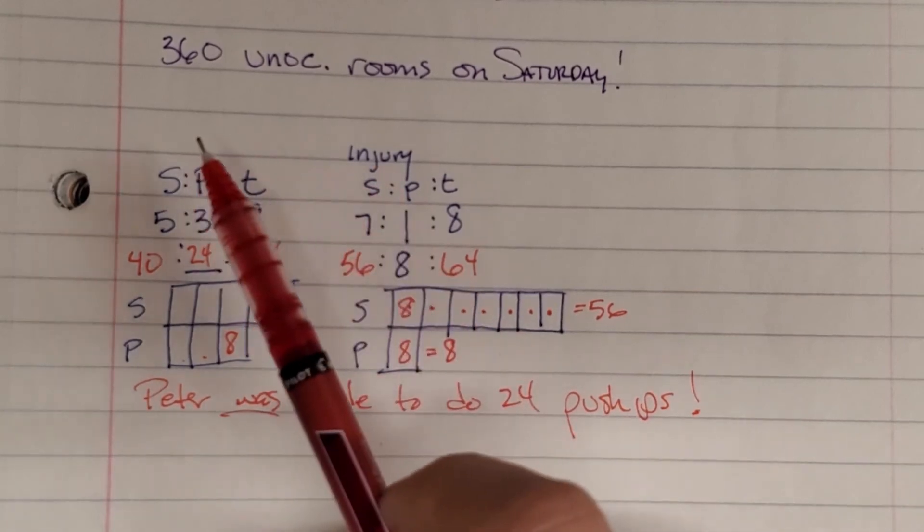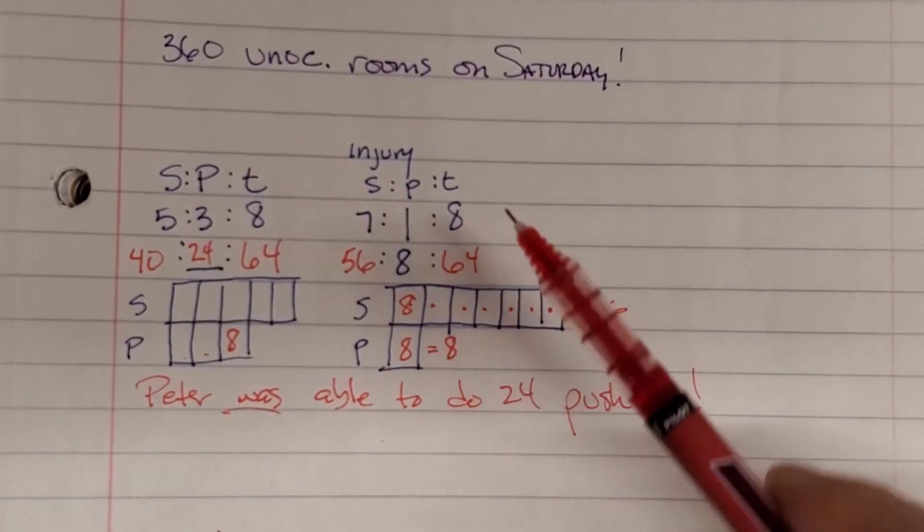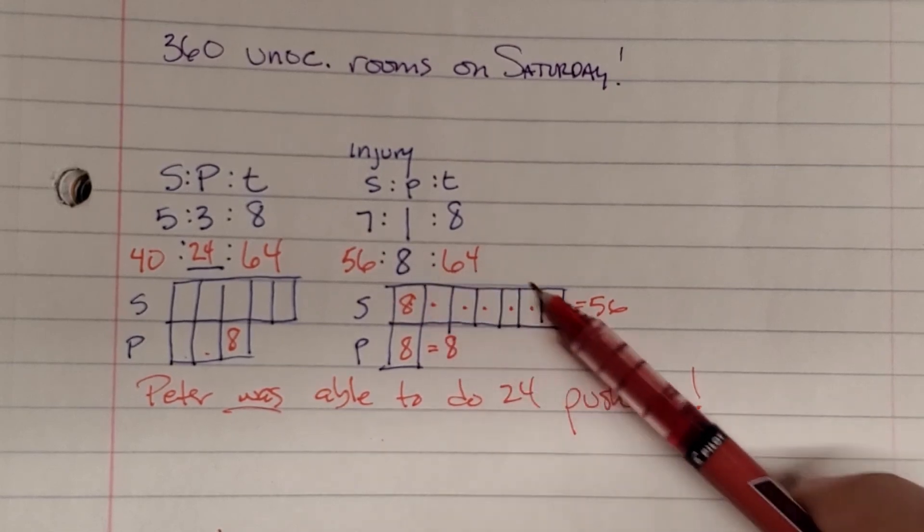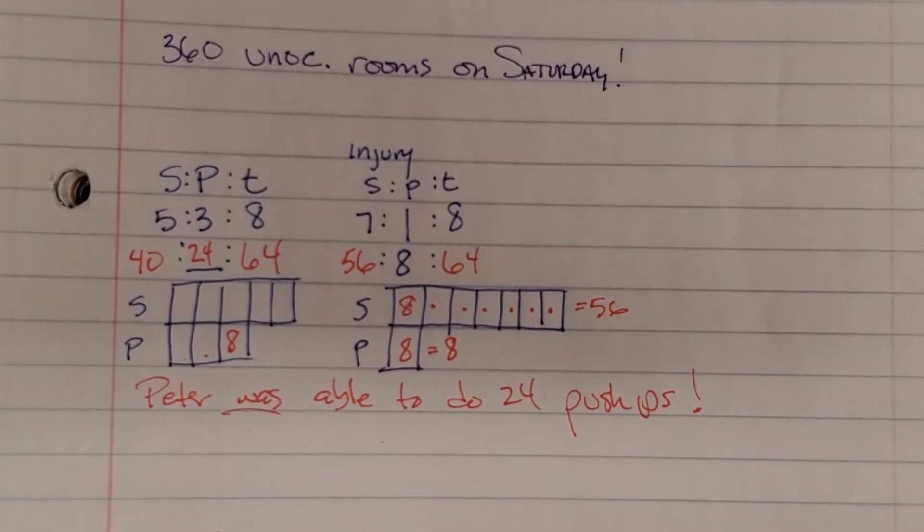So write out your ratios, label them, draw your tape diagram, then start working with the knowledge you know, and apply that information to knowledge you don't know to find what you're looking for. Good luck.